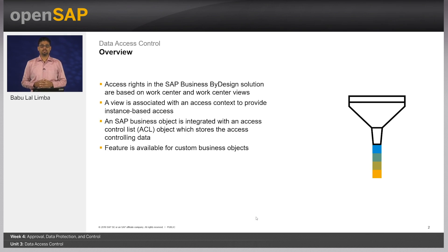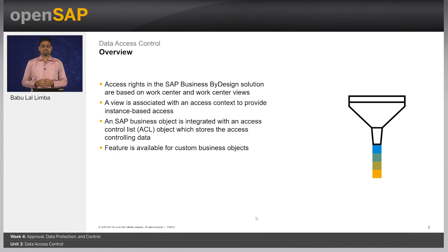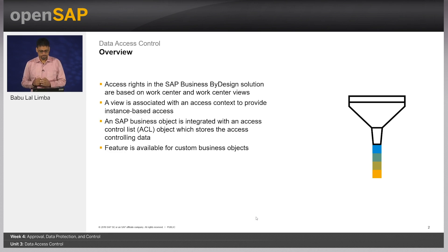Access rights in Business ByDesign are based on work centers and work center views. Each work center view is assigned an access context which is used to control access to data. For example, the purchase order view has an access context of company, meaning that access to purchase orders can be controlled based on company. You can set up the system such that if user A is allowed to access purchase orders of company C1, he or she should not be able to access purchase orders of company C2. This is also known as instance-based access.